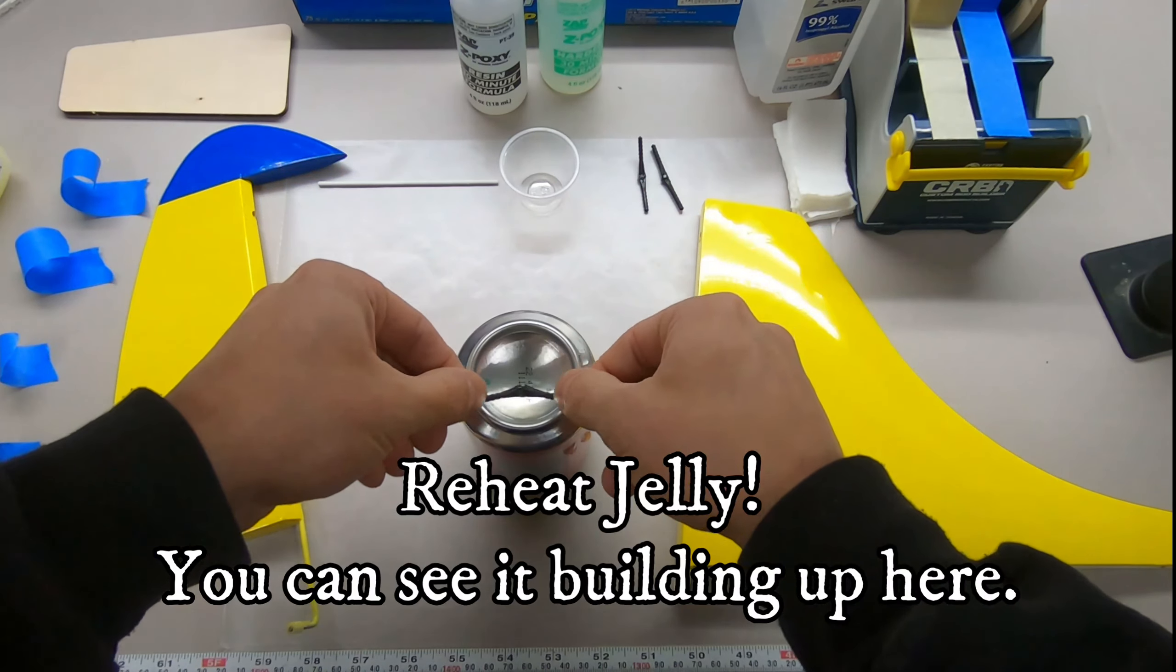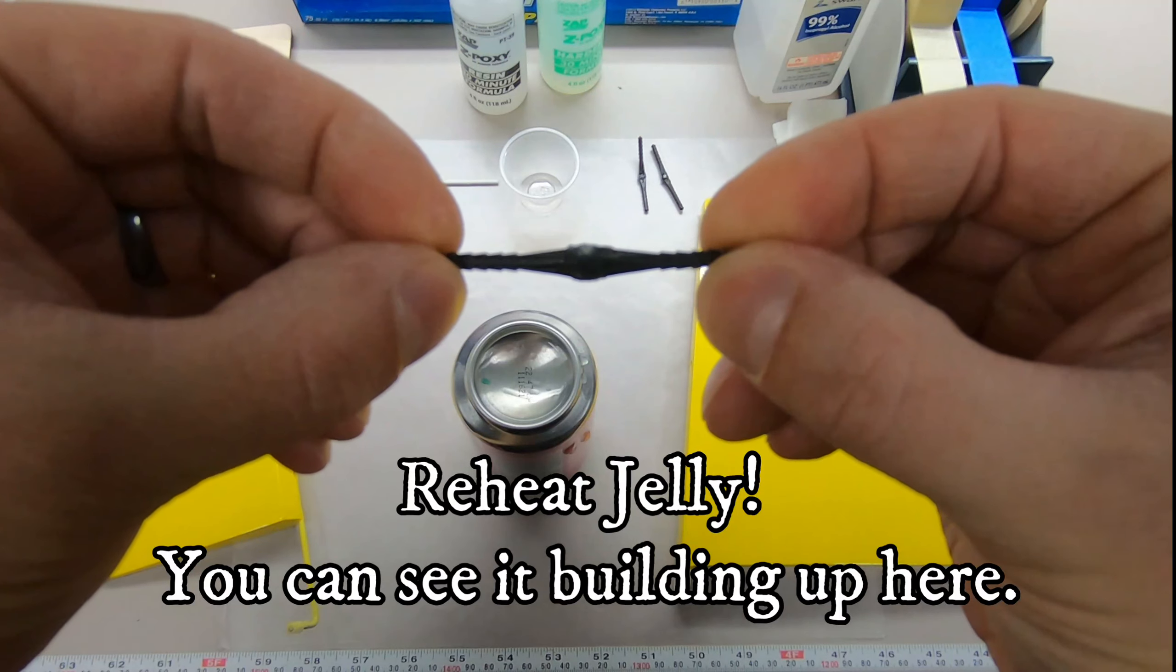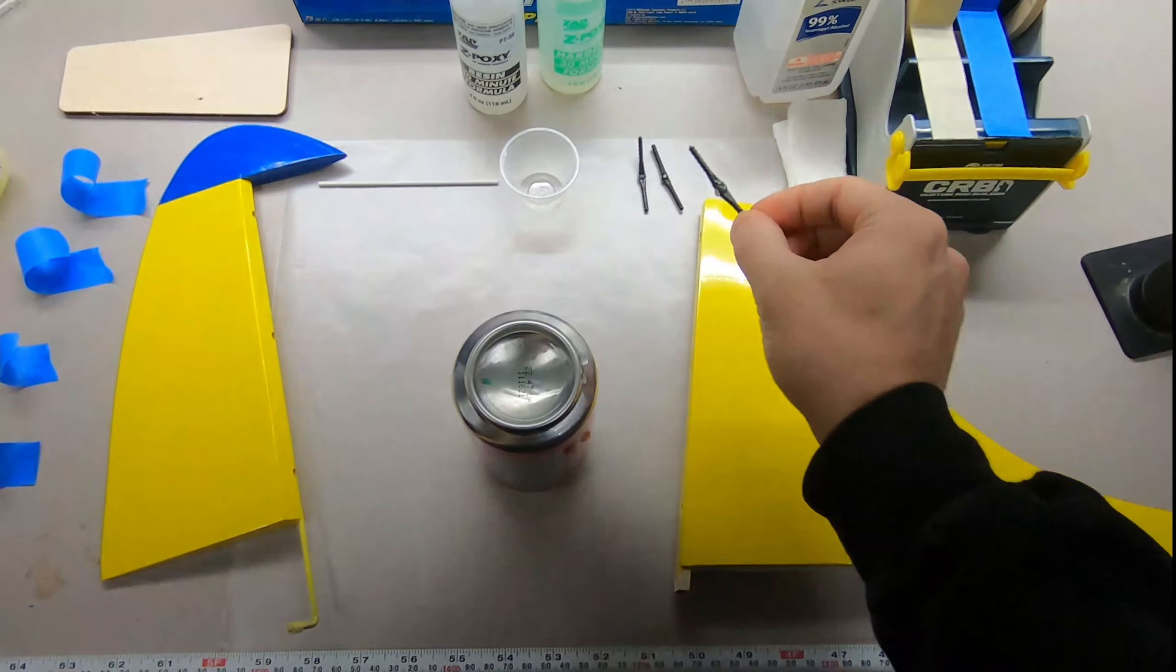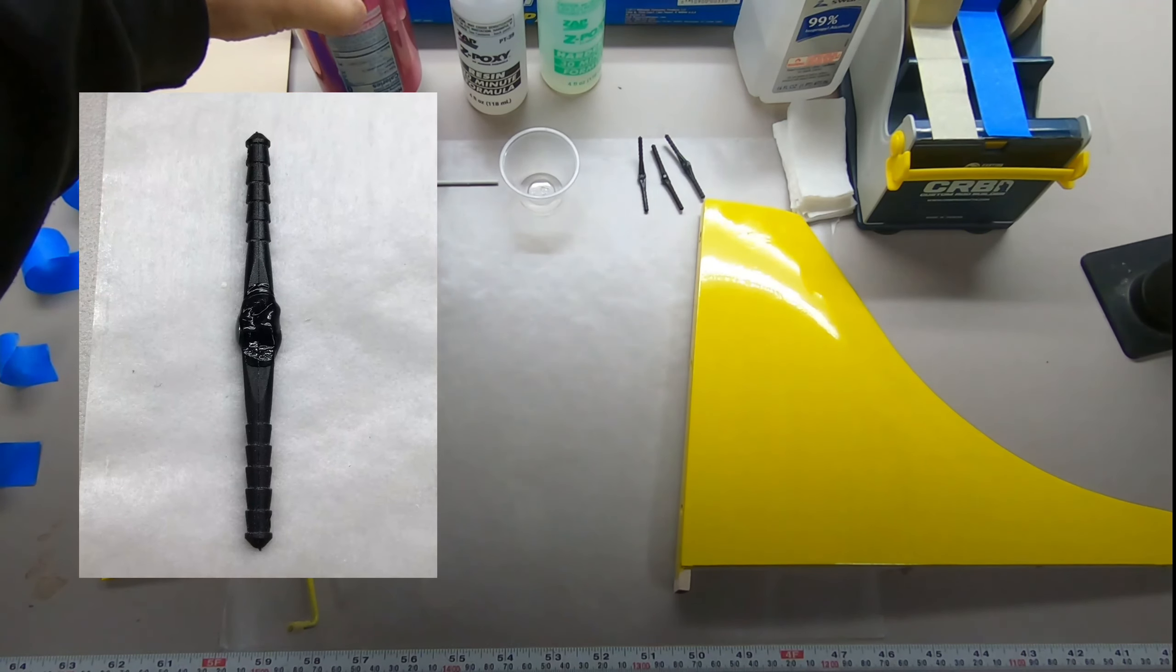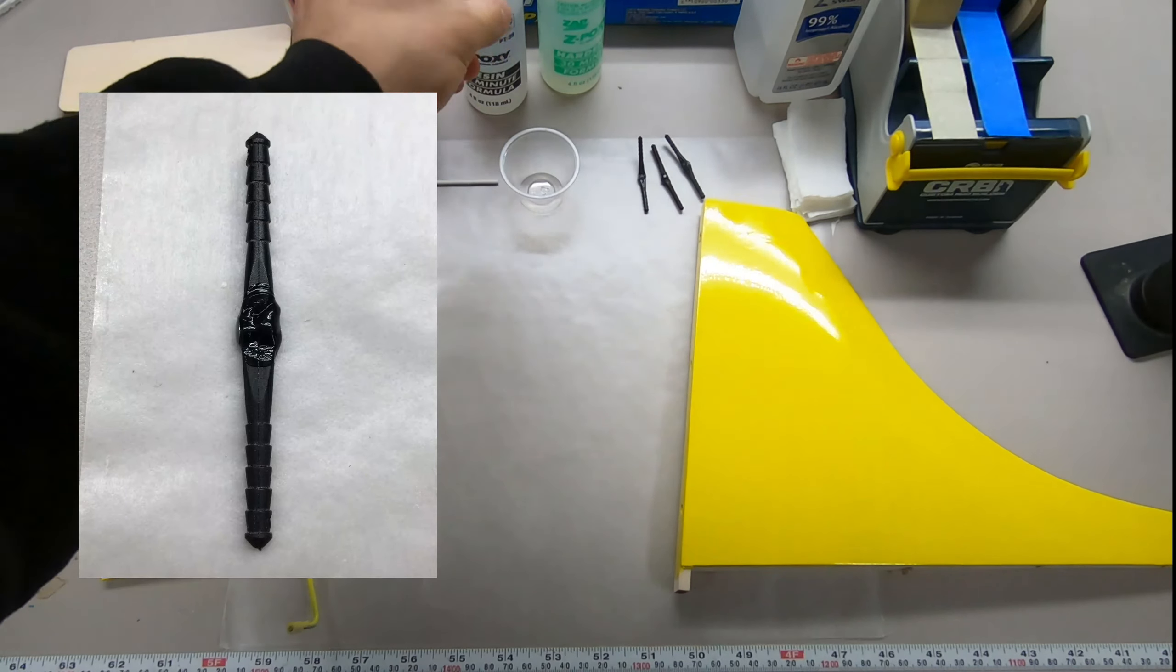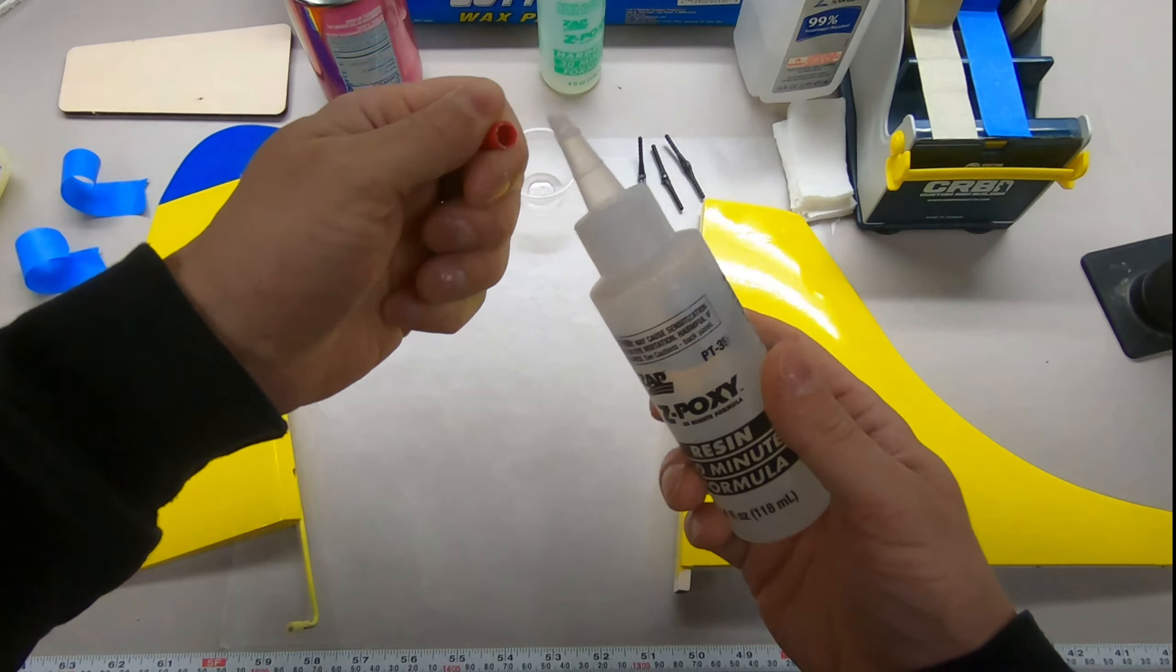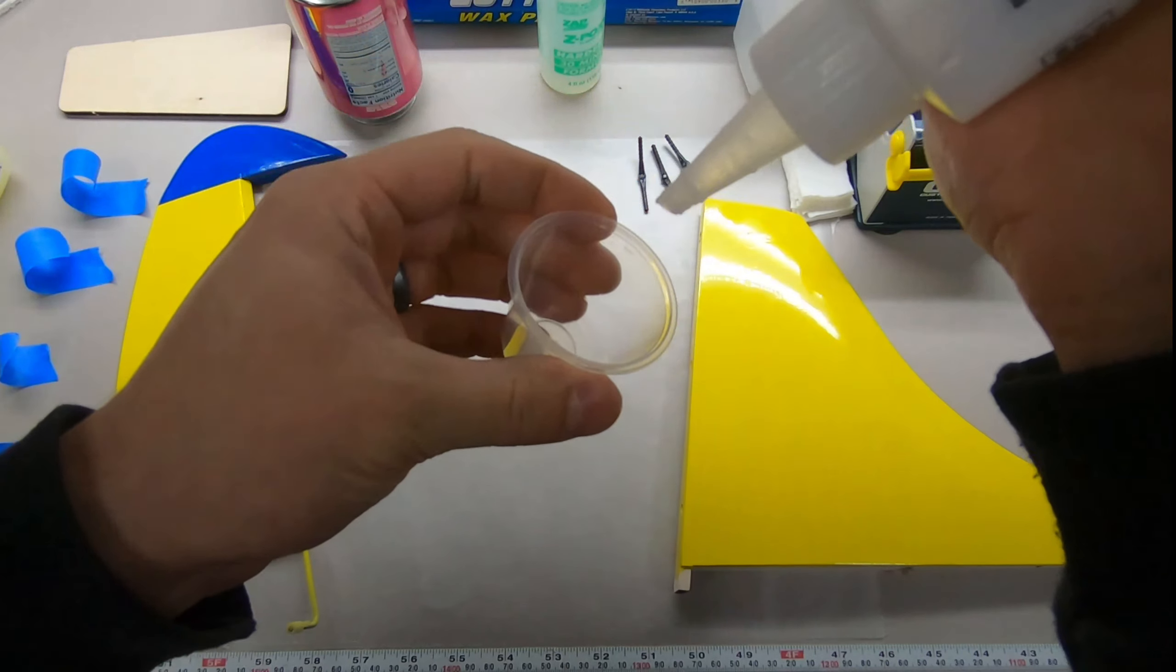Beauty of this is it will solidify. It won't run everywhere like oil does. All right, we got those drying. Little cans at her side. I like the zap product 30-minute epoxy for doing hinges. Got a little mixing cup here.